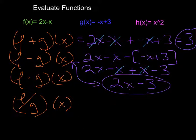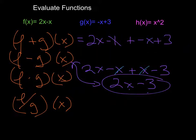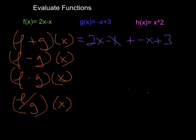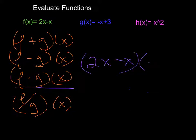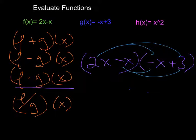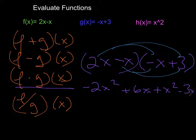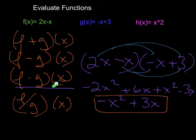All you can do at this point is simplify as much as you can and then leave everything else alone. When multiplying two functions, f times g is 2x minus x multiplied by negative x plus 3. We have to FOIL this out, giving negative 2x squared plus 6x plus x squared minus 3x. Combining like terms, that's negative x squared plus 3x, which is my final answer.